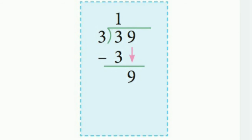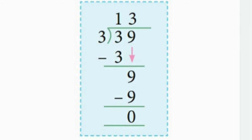Bring this 9 down and then divide 9 by 3. In this case, 3 threes are 9. So we write here 9. Then 9 minus 9, we subtract and get 0. So our answer is: the quotient is 13 and the remainder is 0.